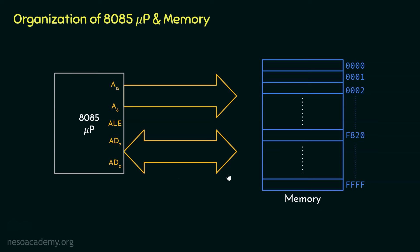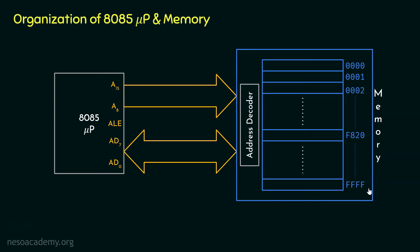The entire address coming from the microprocessor is divided into two different sets of channels, so this is not a complete view of the memory. Within the memory we will also need something called the address decoder, which helps the memory find the exact address that the 8085 microprocessor wants to communicate with. In order to communicate with a particular memory location, the microprocessor will have to load the address on the bus from somewhere.